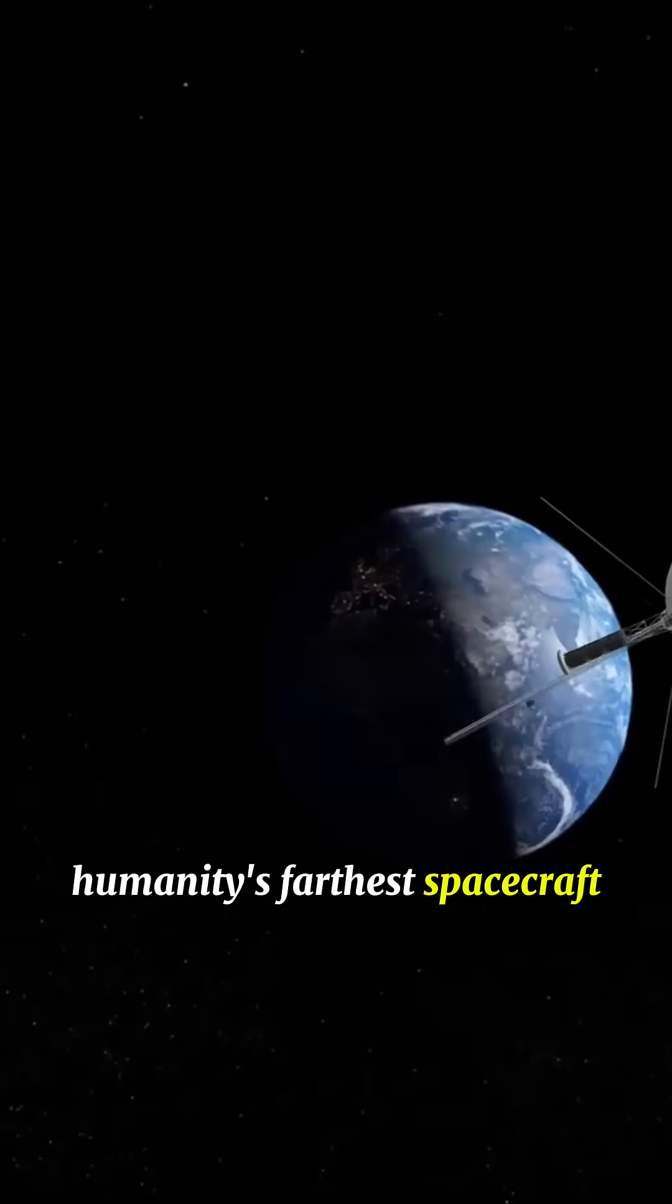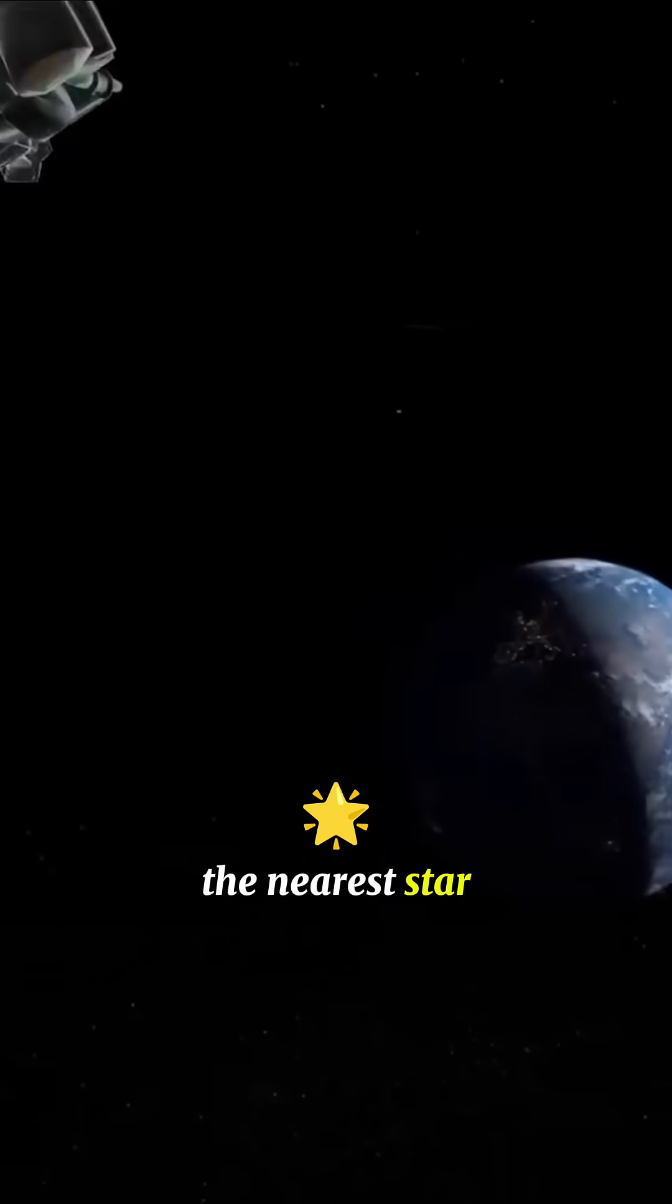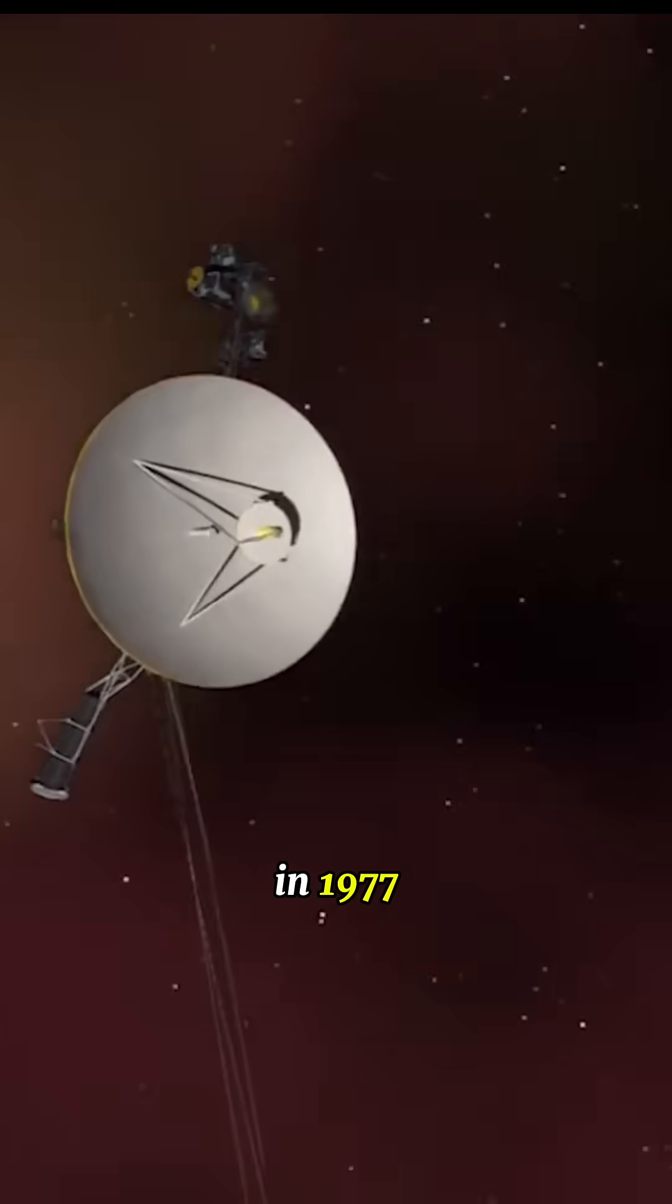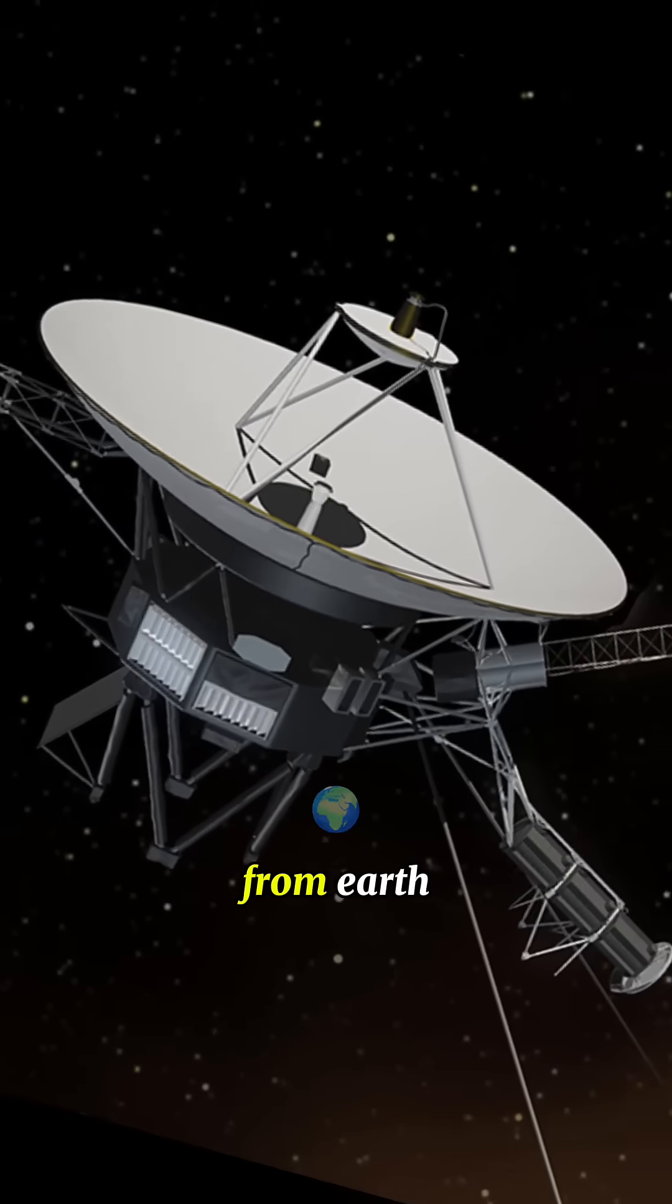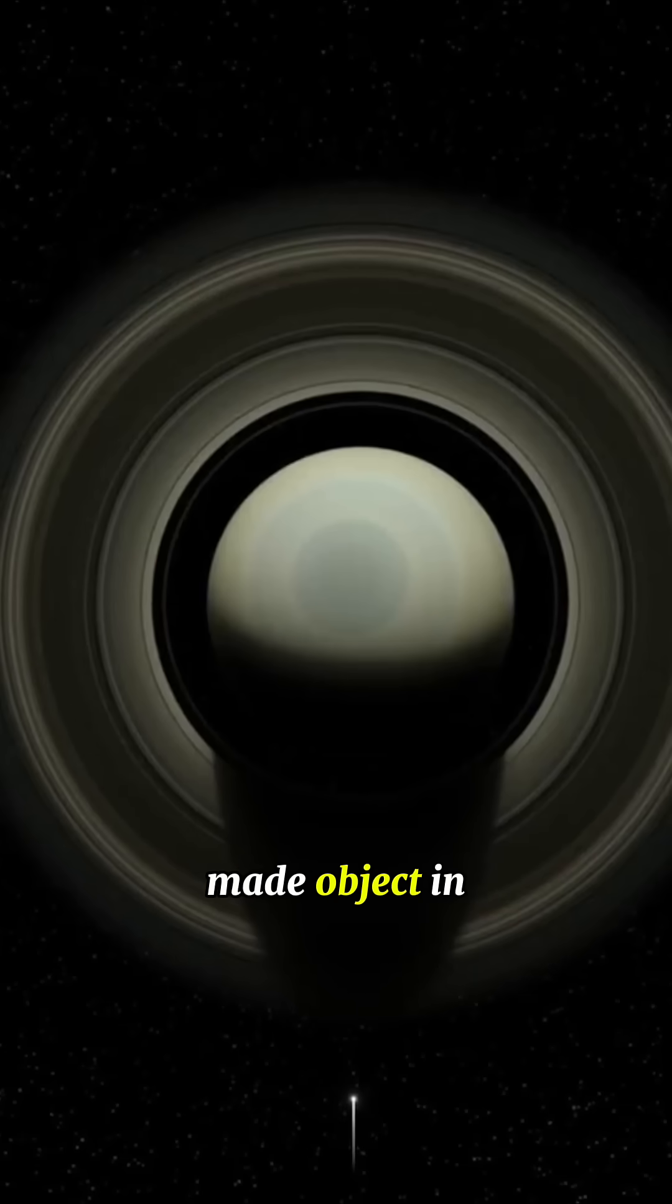Did you know, humanity's farthest spacecraft will never reach the nearest star. Voyager 1, launched in 1977, is now more than 24 billion kilometers from Earth, the farthest human-made object in history.